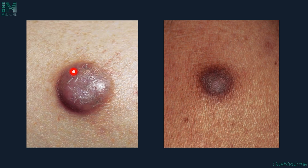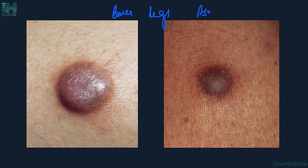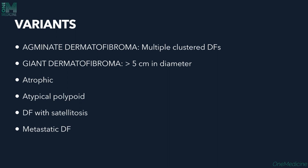Here you can see a solitary nodule with a reddish-brown surface, and another hyperpigmented nodule on the lower leg — the most commonly affected site. Most of the time these lesions are asymptomatic, though burning and pruritus can occasionally be present.